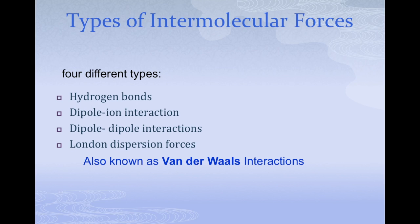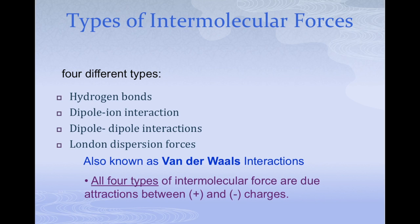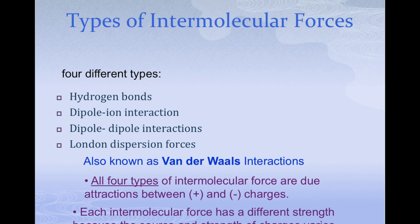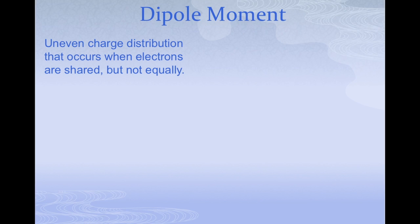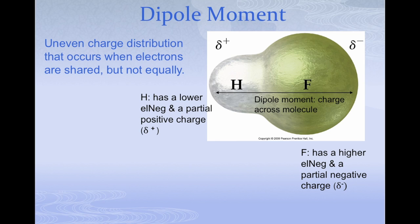All four of these interactions are due to attraction of positive and negative charges that exist in molecules. A dipole moment is what we call an uneven electron charge distribution across a molecule — it occurs within a covalent compound where electrons are shared but not equally.